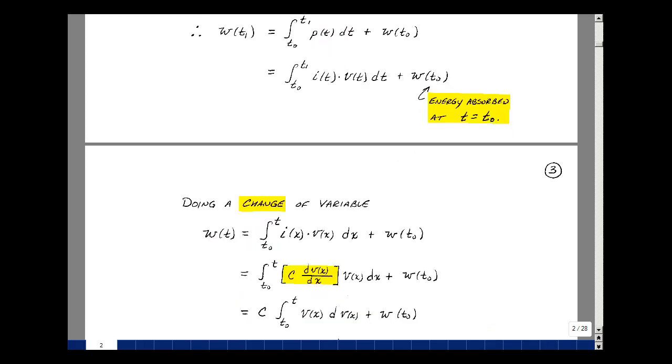Let's again do a change of variable. We'll replace T1 by T. Of course, over here, replace that by T. And again, we'll use a dummy variable for the terms here. Just have I of x, V of x, and then dx. And then we have our energy absorbed at time T equals T0.